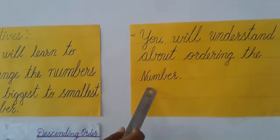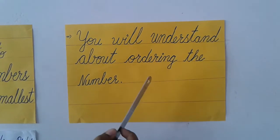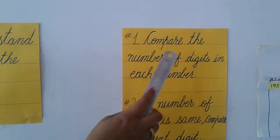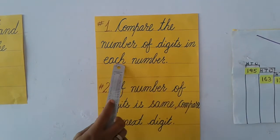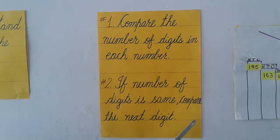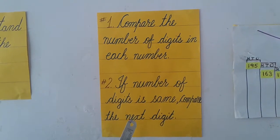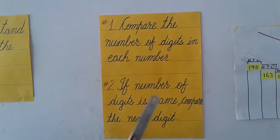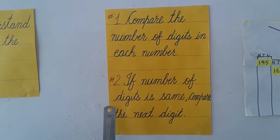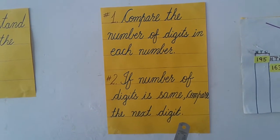Now let's understand how to order the numbers. First, compare the number of digits in each number. As we are doing three-digit numbers, we will first compare the hundreds place. If the digits are the same in the hundreds place, we compare the tens place, and if those are also the same, we compare the ones place.